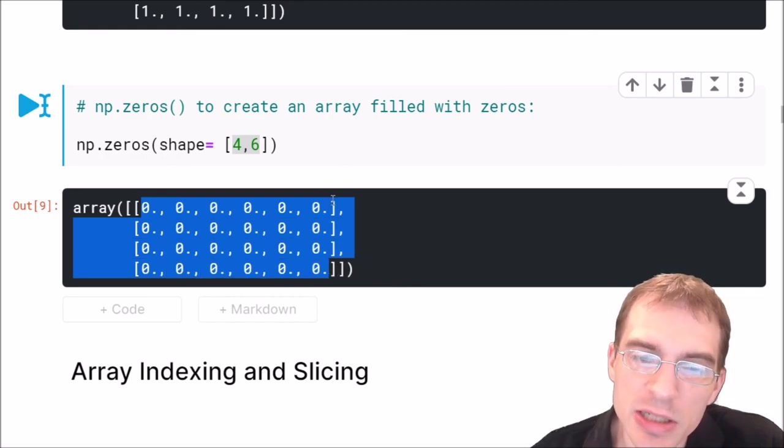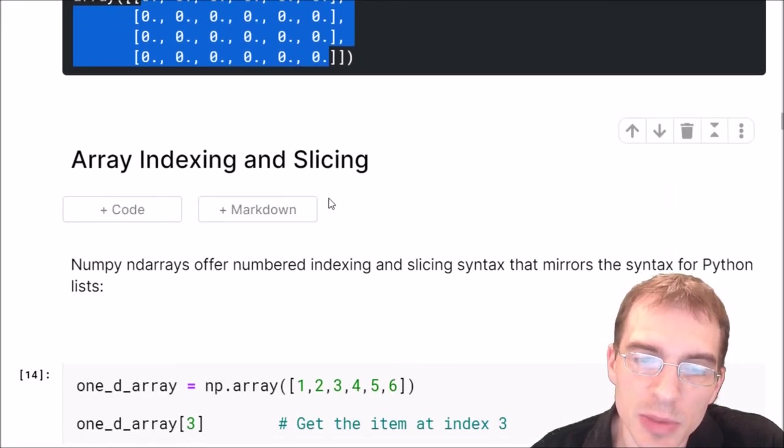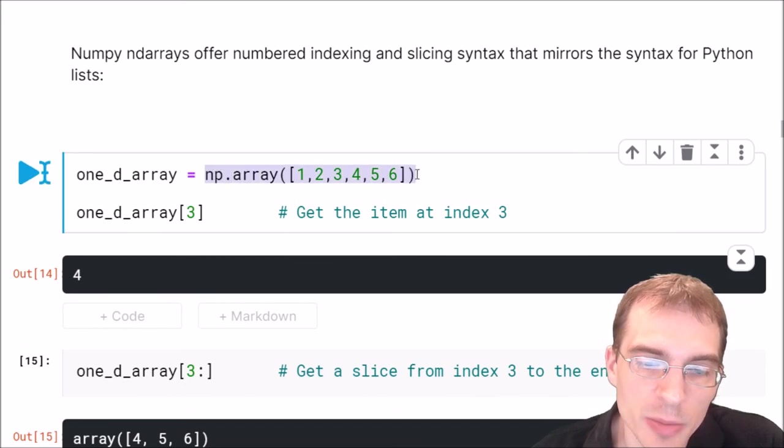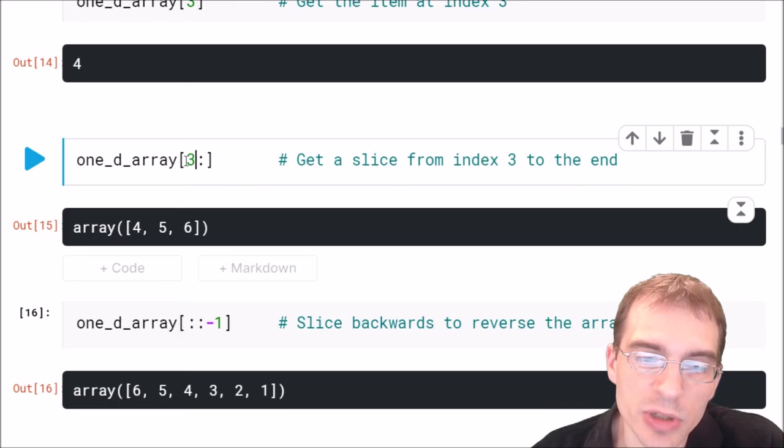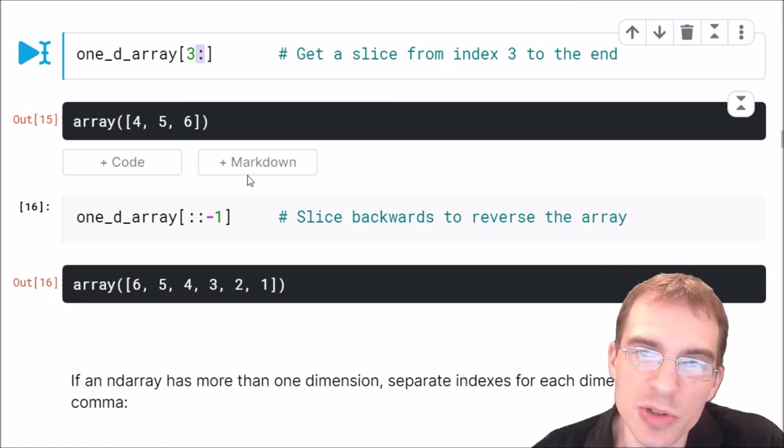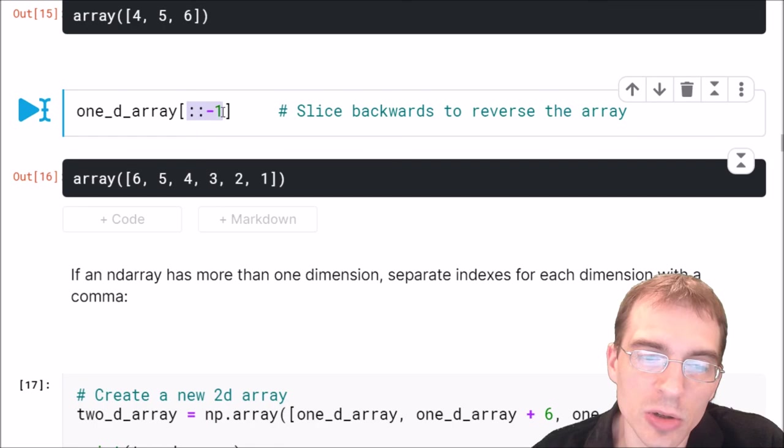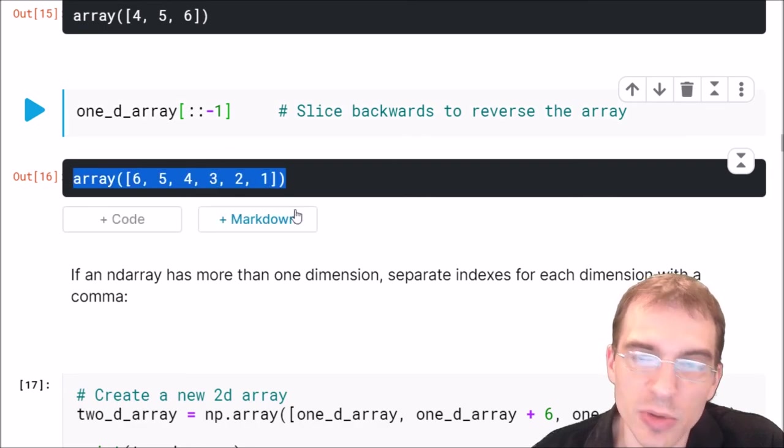Numpy arrays offer similar indexing and slicing operations to python lists. Here we're going to make a new numpy array. If we want to index into this array and get a specific value, say the value at index three, we just write the name of the array and square brackets we put the index where we want to get the value. In this case the index three gets us the number four because in python the indices start at zero. We can also slice an array just like a list. Here we're saying start at index three and get us everything till the end. You can also do the same slicing trick reversing lists with arrays. If you do colon colon negative one that's saying slice the entire array but do it backwards. That essentially reverses the array.